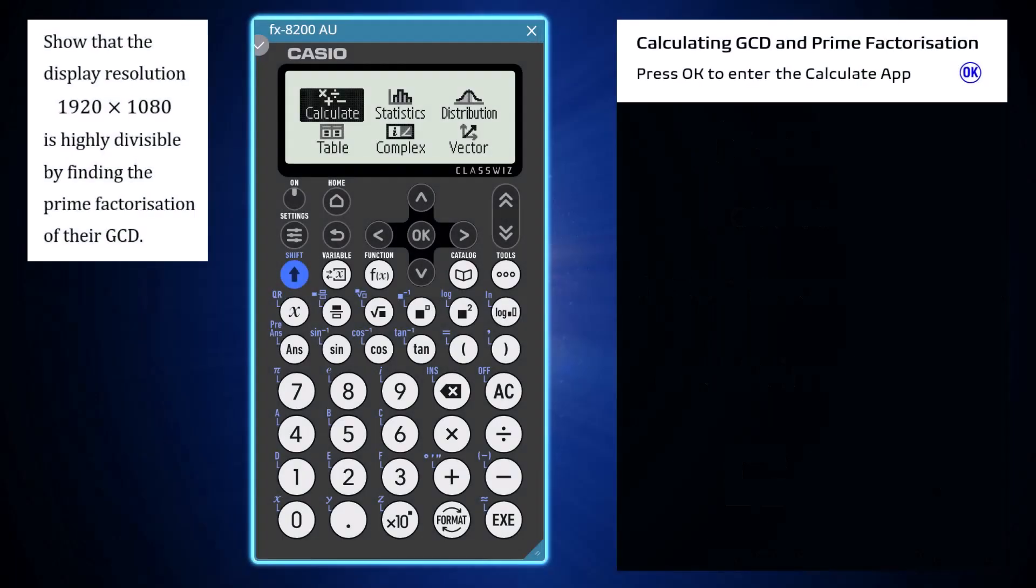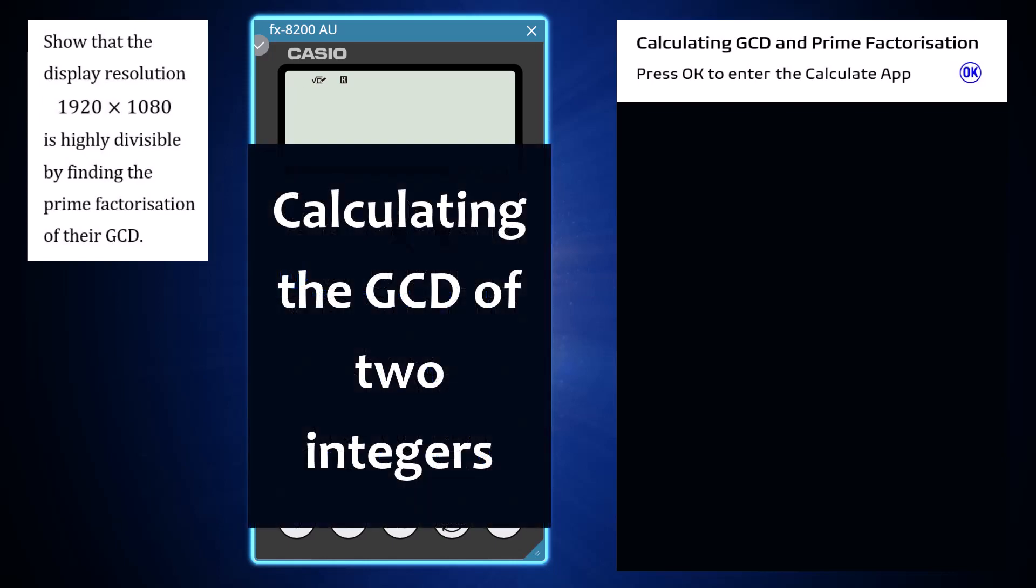Using the Calculate app of a Casio FX8200AU, open from the home screen by pressing OK, a range of numerical calculations can be performed, including the greatest common divisor or GCD of two integers.